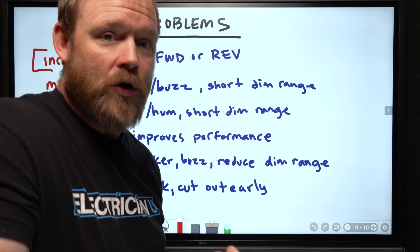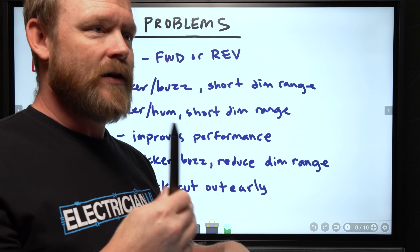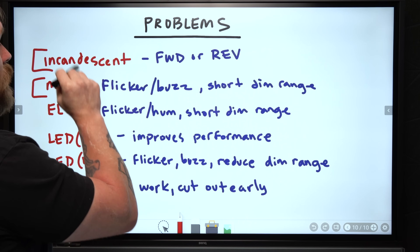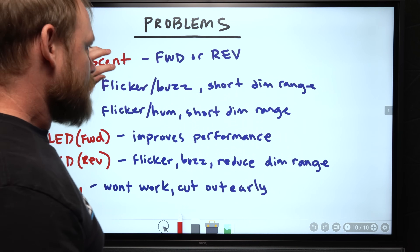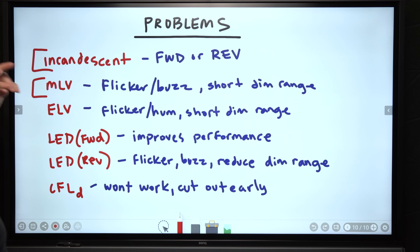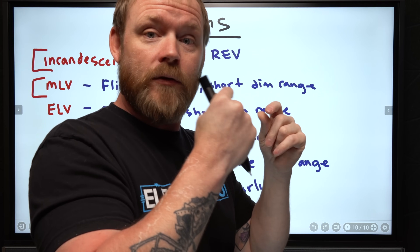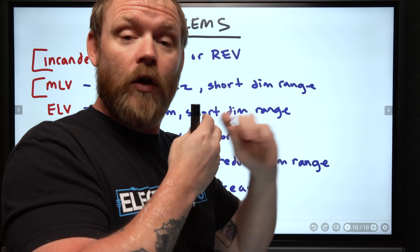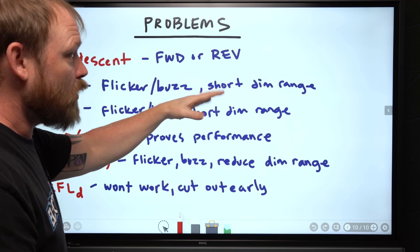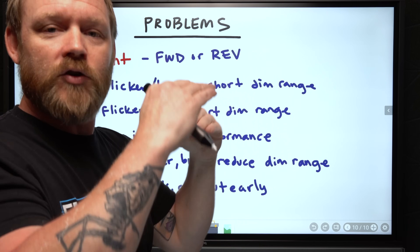Problems by bulb type: incandescent works fine on forward or reverse phase - that's why triacs still work, it doesn't really matter since it's just a resistor changing current. Magnetic low voltage - if you use the wrong phase cutting, you'll probably see flickering, buzzing, or a short dimming range. Electronic low voltage - if you don't get this right, you'll have abrupt state changes that build up over time and develop a hum or flicker, because it's not meant to handle the switching. Both MLV and ELV will likely give you a shortened dimming range.